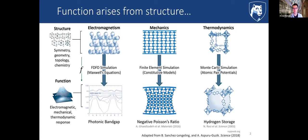The general motivation for why material scientists should care about generative design or inverse design in a broader sense is basically the idea that function arises from structure. Everyone here knows about structure-property relationships and processing-structure-property-performance relationships. Structure — in some sense of symmetry, geometry, topology, or chemistry — leads to certain functionalities depending on the physics you care about.